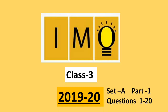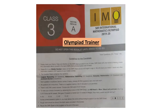Welcome to our channel Olympiad Trainer. Here I am with the question paper of IMO, that is International Mathematics Olympiad exam for class 3, year 2019-20 Set A. The question paper comprises 4 sections: Logical Reasoning, Mathematical Reasoning, Everyday Mathematics, and Achievers section. In this video we are going to see the first two sections. New users please subscribe our channel Olympiad Trainer for more such solved question papers.